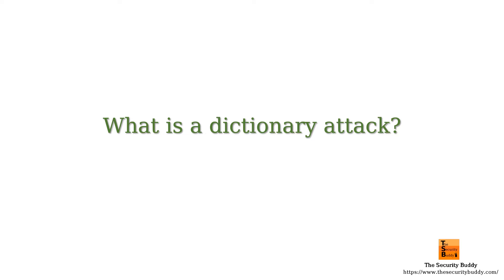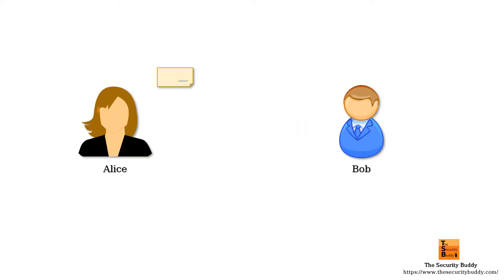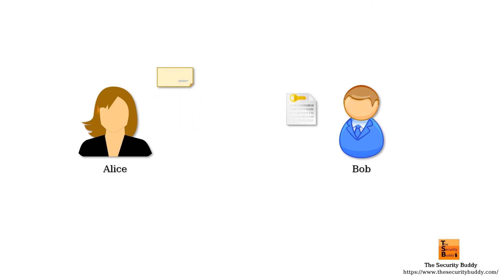What is a dictionary attack? In this video, we will try to understand that. Cryptography is the art and science of making secret codes. An original message or plain text is first transformed into a secret code or cipher text using a secret key. We call this process encryption.